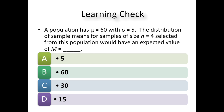Population has a mu of 60 with a standard deviation of 5. The distribution of sample means for samples of size 4 selected from this population would have an expected value of the mean of what? If you know that your population mu is 60, you should assume that your sample mean equals that population mu — 60.